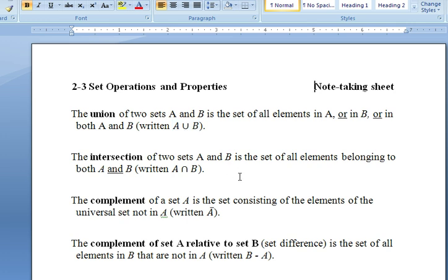Intersection of two sets is a set of all elements belonging to both A and B, and we use this symbol for intersection.